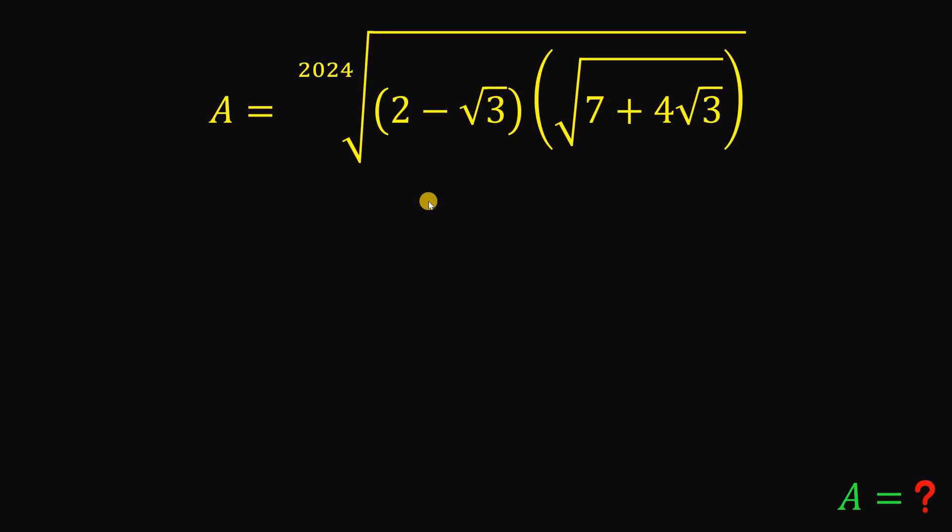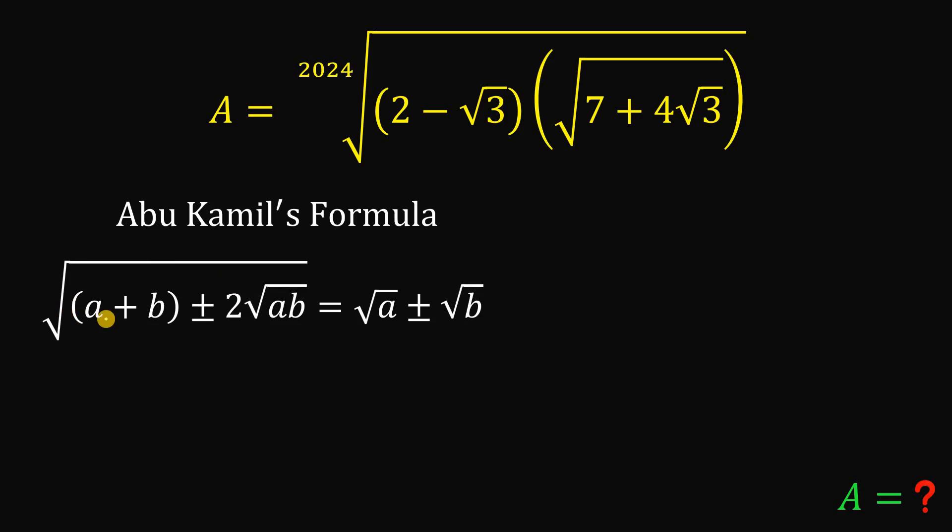Alright, so to answer this kind of question, we will use one technique and that technique is what we call the Abu Kamil's formula or Abu Kamil's way to simplify a radical expression. So here it is. If we have a pattern like square root of A plus B plus or minus 2 times square root of A times B, this is equivalent to square root of A plus or minus square root of B provided that A is greater than B.